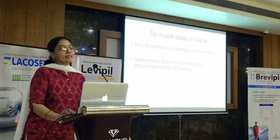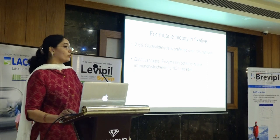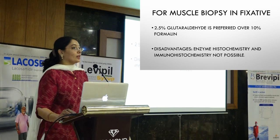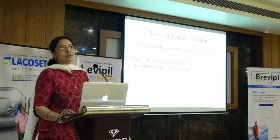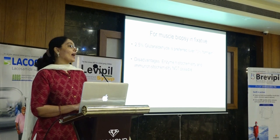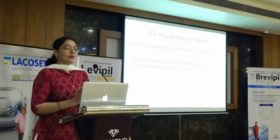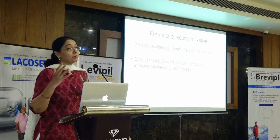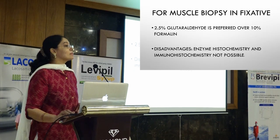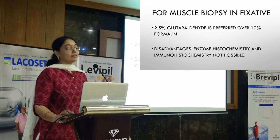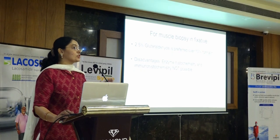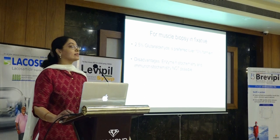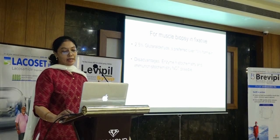If the muscle biopsy is to be sent for histomorphological analysis only, 2.5% glutaraldehyde is preferred over 10% formalin, and we prefer plain 2.5% glutaraldehyde, not activated glutaraldehyde. The main disadvantage would be that enzyme histochemistry and IHC cannot be done on this — it is just morphological analysis. So we cannot tell you what type of muscular dystrophy it is or whether there are neurogenic changes.